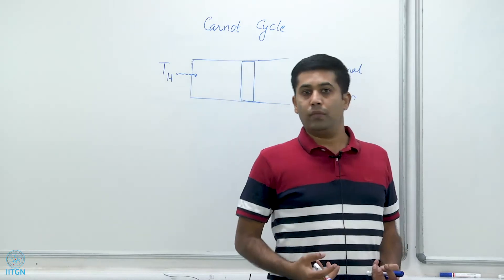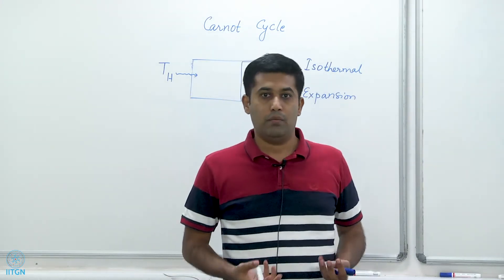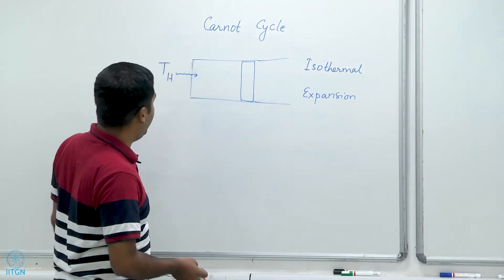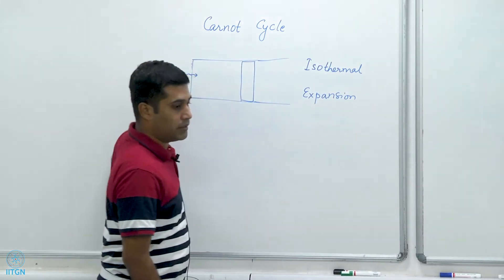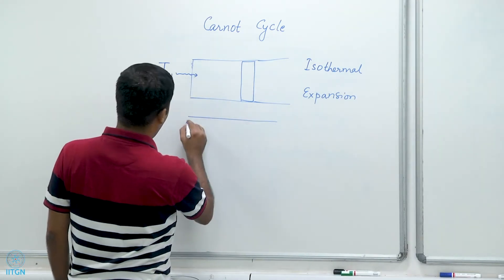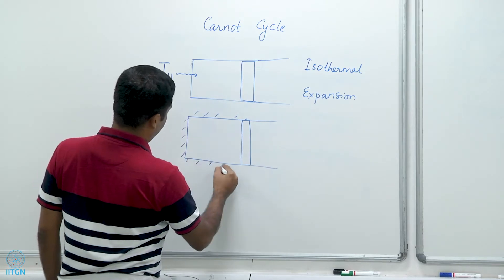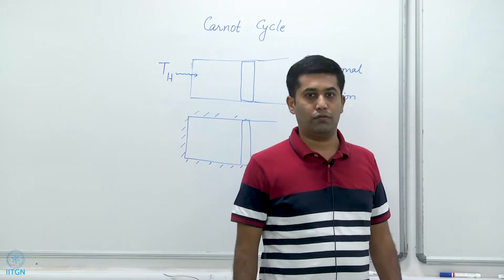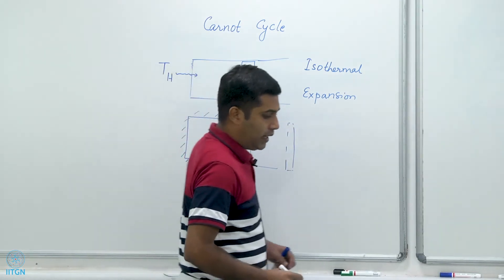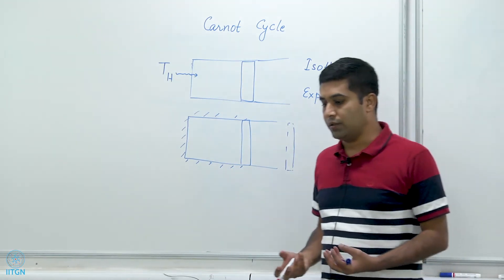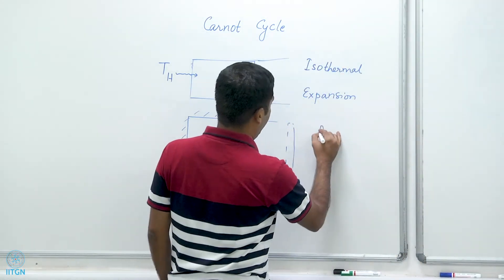In other words, heat is being added to the system without increasing its temperature — this is an idealized process that never truly happens, but it is useful to study. At the end of this isothermal expansion at temperature TH, the contact with the thermal reservoir is removed and the entire system is made adiabatic, meaning no heat can cross the system boundary. The gas is then allowed to expand further. During this adiabatic expansion, both temperature and pressure drop because there is no incoming energy.